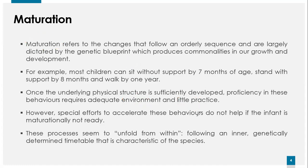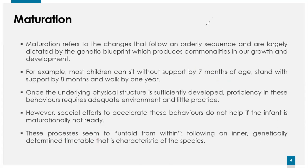These features can only emerge once you are maturationally ready. These processes unfold from within, following an inner, genetically determined timetable — from childhood through adolescence, adulthood, and old age. For example, voice changes and facial hair can only be observed during adolescence, not in a baby. Menstrual cycles and other physical changes are observable during the adult stage. Gray hair and declining thinking capabilities happen only in old age. These are the stages of maturation.